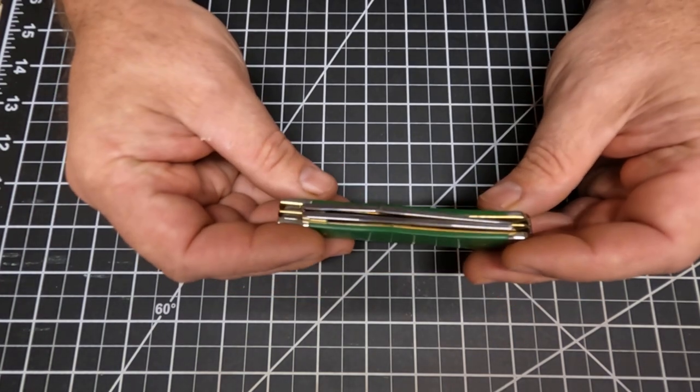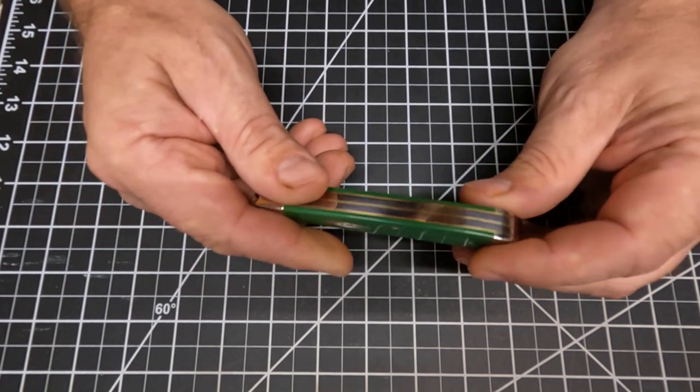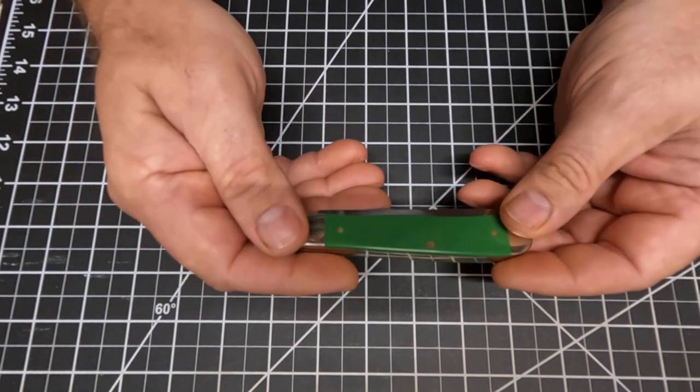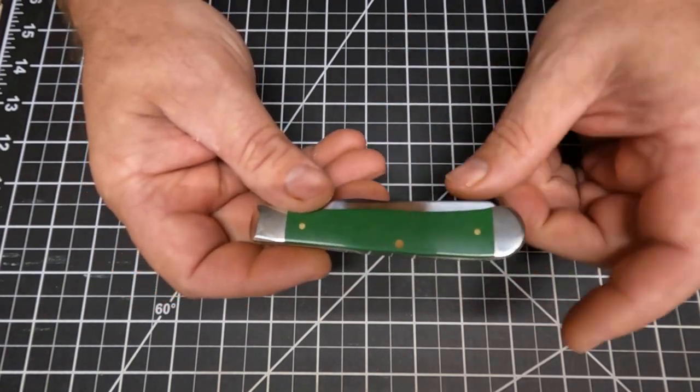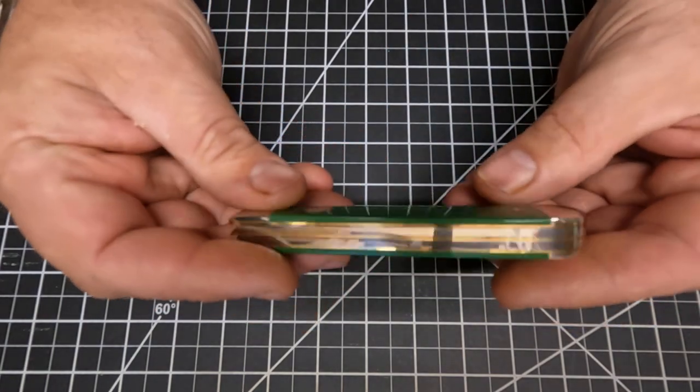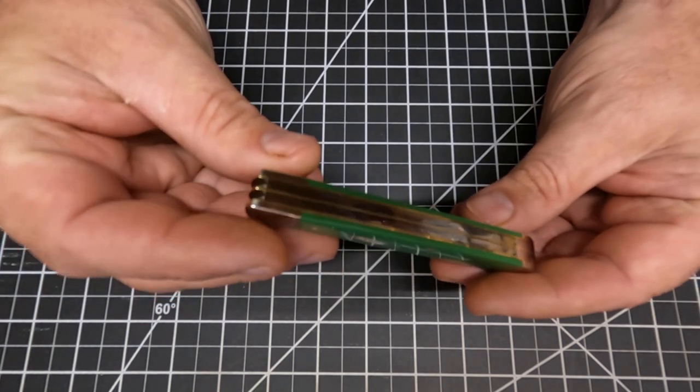I'll give you a little more details. It's got the nickel silver type bolsters on it, y'all can see that there. It has brass pins in it, and I'll show you the back side right there.